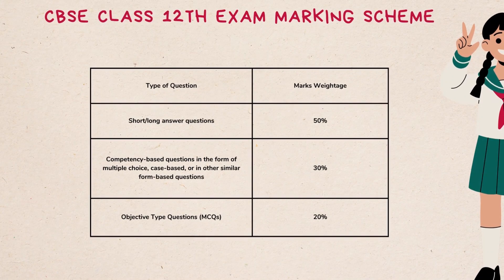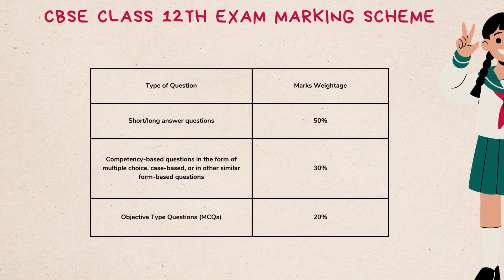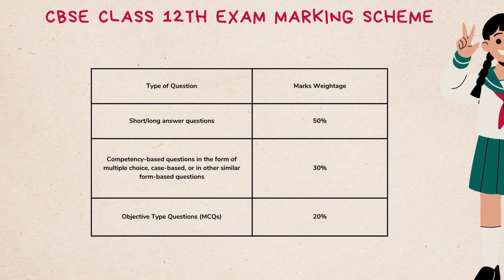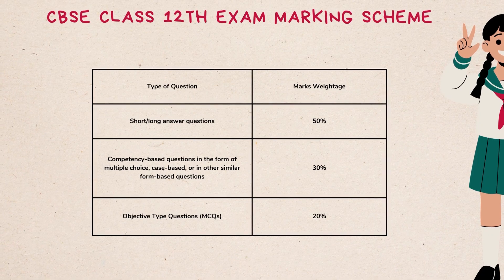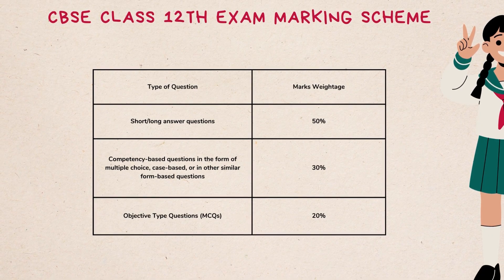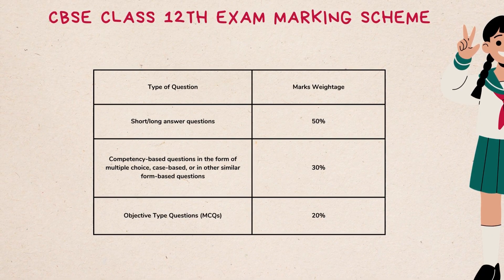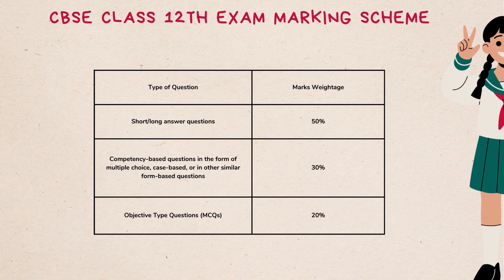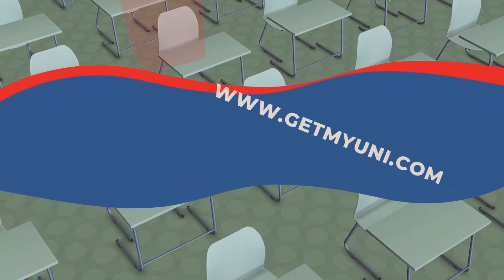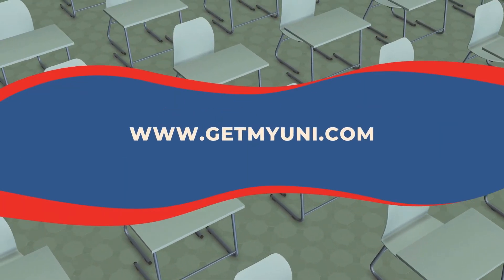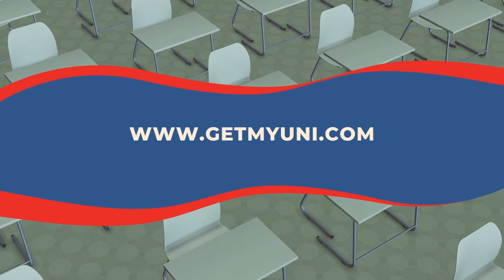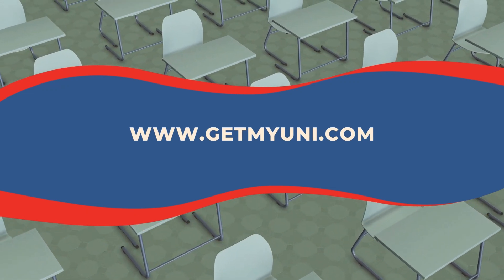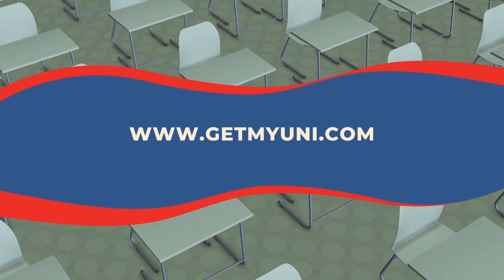The total marks for the exam are 100, which includes 80 marks for theory and 20 marks for practical. To download the detailed blueprint, check out the link in the description and visit our website at www.getmuni.com.